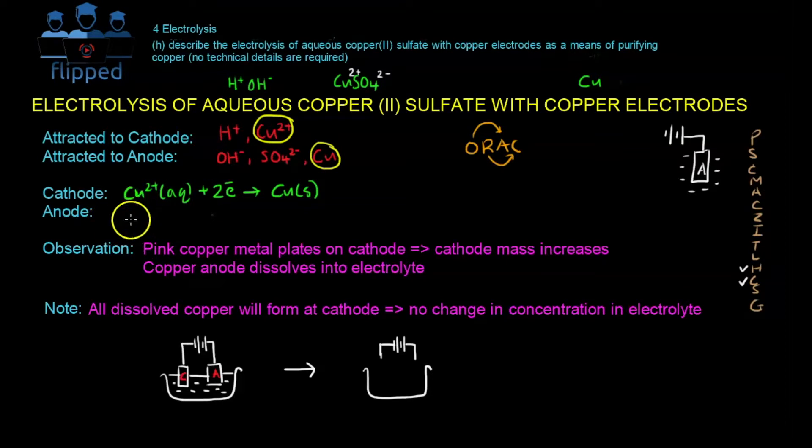For the anode, it's copper solid. This is the anode itself. The copper itself undergoes oxidation to form Cu2+ aqueous and 2 electrons to counter this 2 plus. Essentially, a zero charge is split into plus 2 and minus 2. So this is the cathode and anode equations.